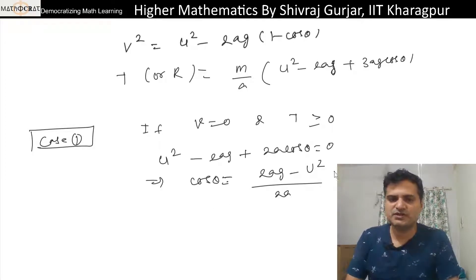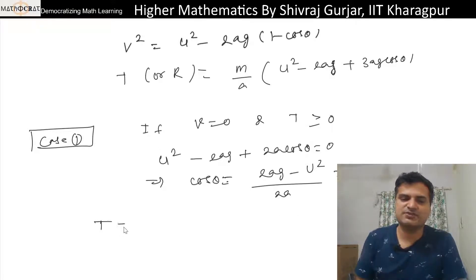So this will be cos θ, let us call this cos θ₁ and tension is greater than 0. So if we put this cos θ value in this point, tension is equal to m/a